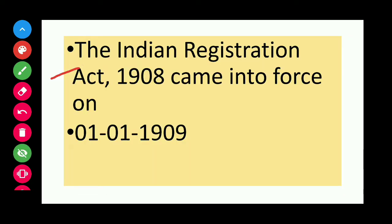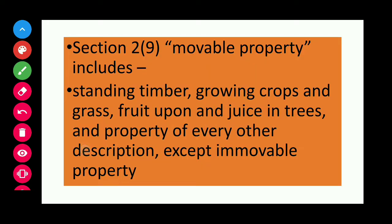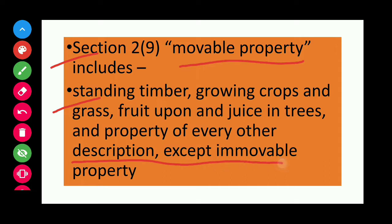The Indian Registration Act 1908 came into force on 1 January 1909. Section 2, Subsection 9: Movable Property includes standing timber, growing crops and grass, fruits upon and juice in trees, and property of every other description except immovable property.